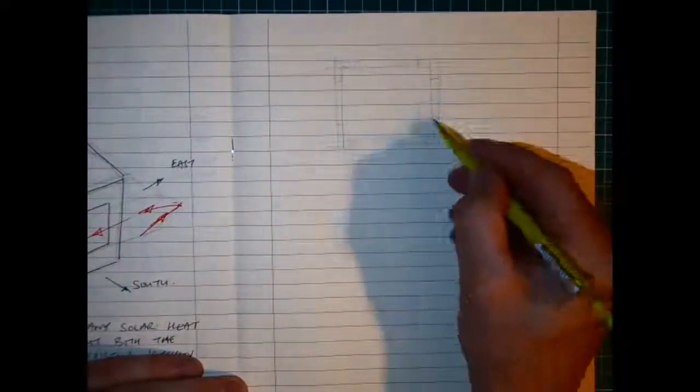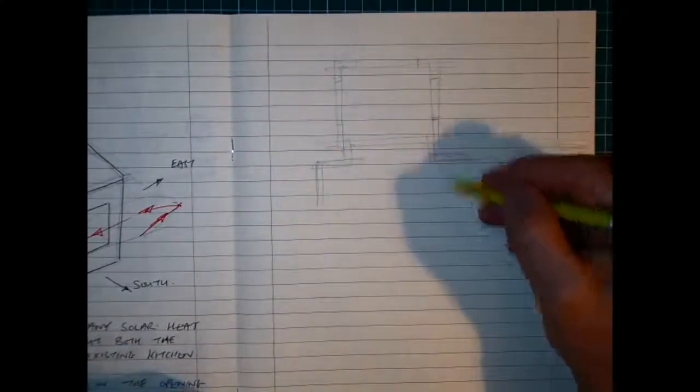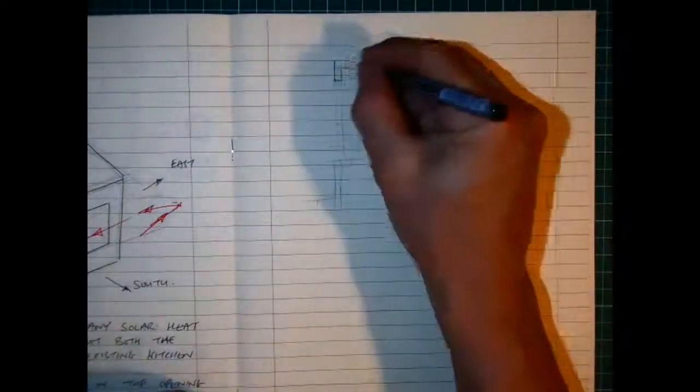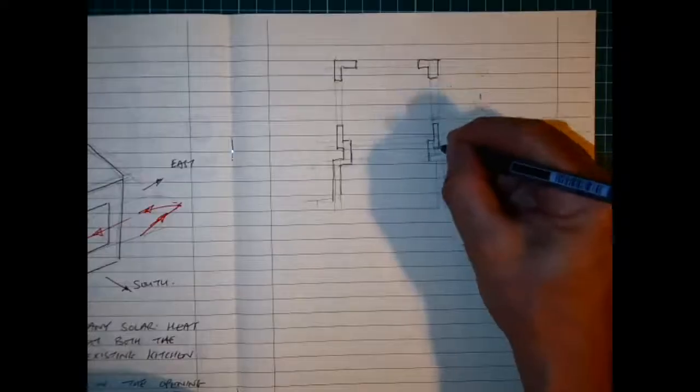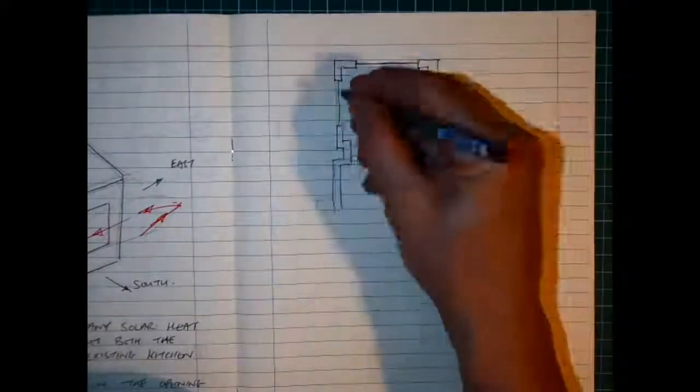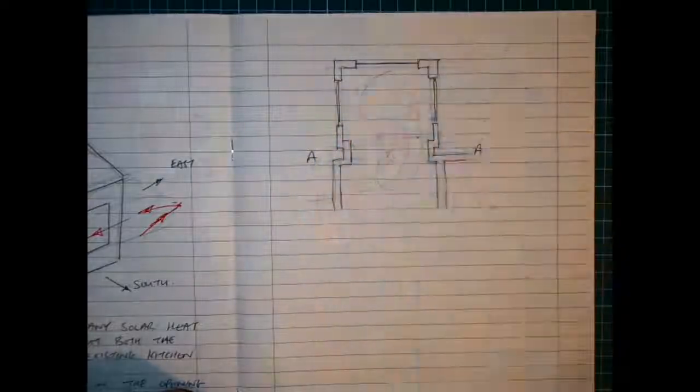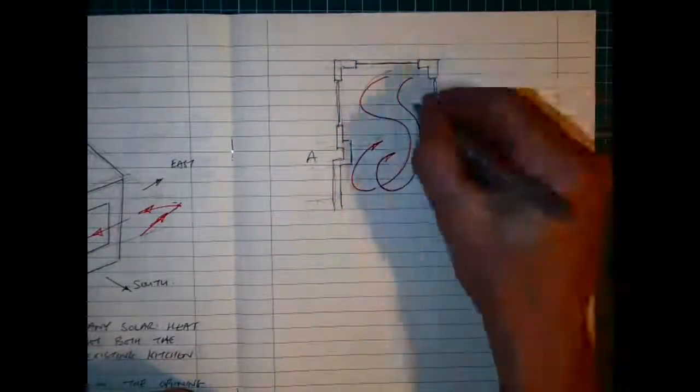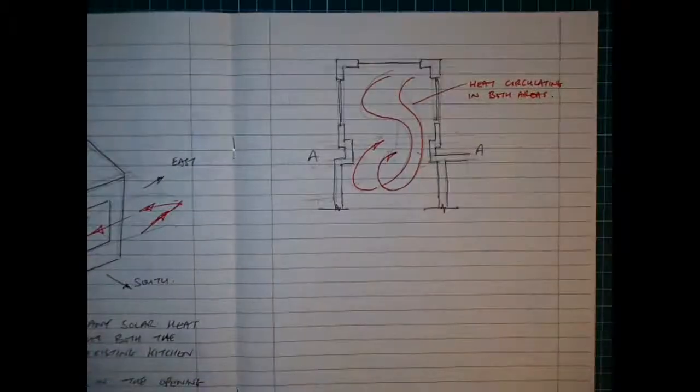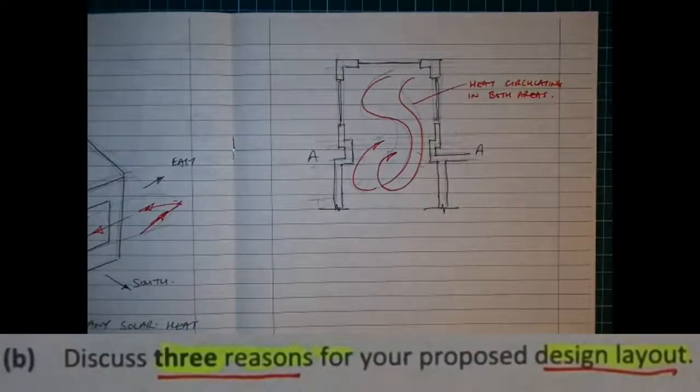Another sketch that I would use here to indicate that would be to just show the way that the heat would be circulating. So it's a basic sketch, it doesn't have to be maybe as elaborate as what I'm drawing here either, and I'm just leaving it a little bit more open and drawing a few sketch names to show heat circulating in both areas. These three sketches should be more than adequate to explain that.